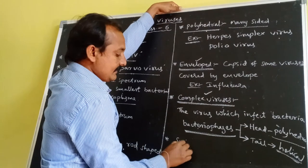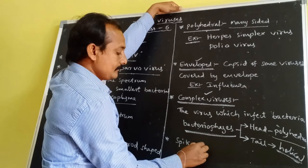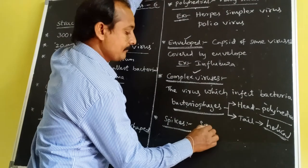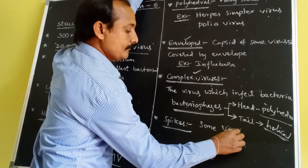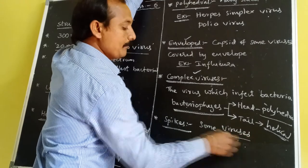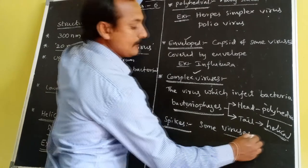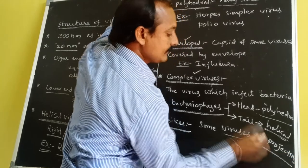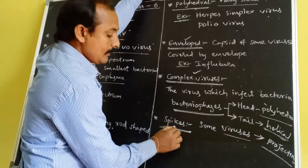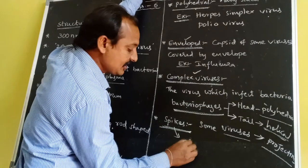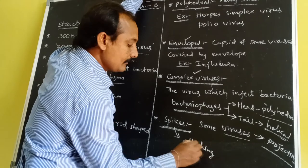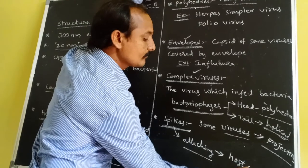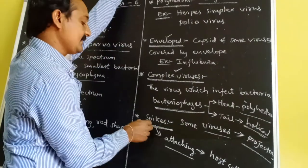The fifth structural feature is spikes. In some viruses, the envelope or capsid consists of some projections called spikes. By the presence of spikes, the virus attaches to receptors on host cells.